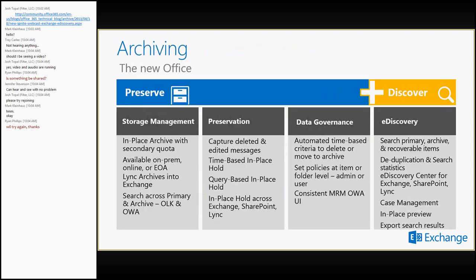For those familiar with Exchange Server 2010's archiving and eDiscovery features, some of this may be a repeat. In Exchange Server 2013 and Exchange Online, we still have the in-place archive with a secondary quota. We support a large number of options for where the archive is housed. We're also linking Exchange, SharePoint, and Lync together so that an administrator can do a single search from one location to see the entire view of an issue across Lync, Exchange, and SharePoint.